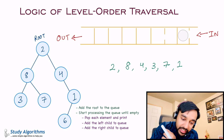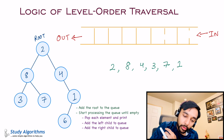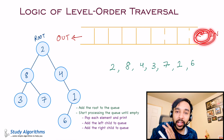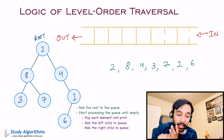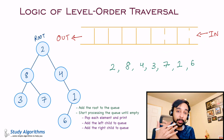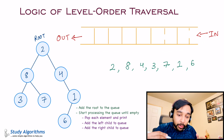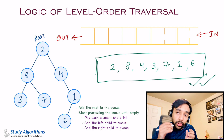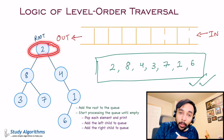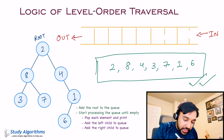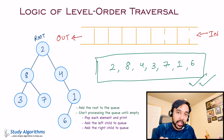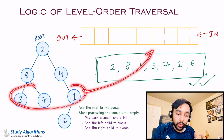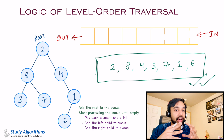Once again, process the queue: I see 6, pop it out, and write it in the output. Does 6 have any children? No. So no more values are added to the queue. Now you try to process the queue and see that it is empty — that means we have processed all the elements, and we have successfully done a level order traversal of this binary tree. The idea is: for every node, put it into your queue and add its children to the queue as well. Keep popping elements one by one. If they have children, add them to the queue. Start processing again until the queue is completely empty.